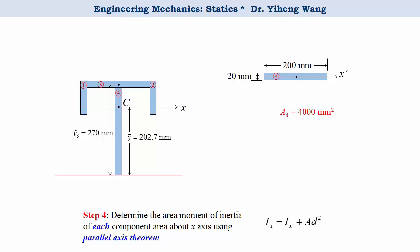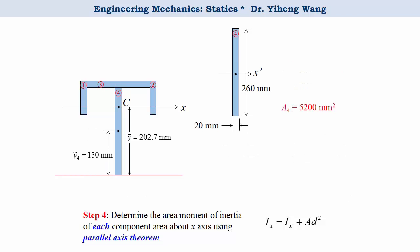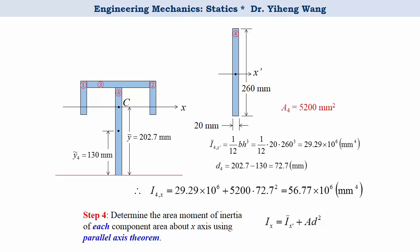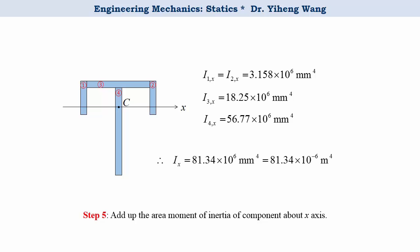We do the same thing for component area three, and then the same again for component area four. Finally, we simply add them all together to get the moment of inertia of this composite area about the x-axis, which is also the centroidal axis of the composite area. And that's the answer to this problem.